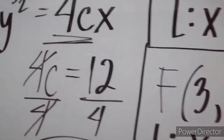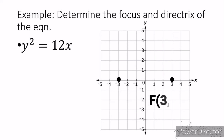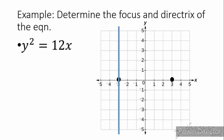Let's graph it. Our directrix is at the x-coordinate, x is equal to negative 3, and our focus is at coordinates 3 and 0. We draw a line to show the directrix and draw a parabola opening to the right. That is how our graph will look.